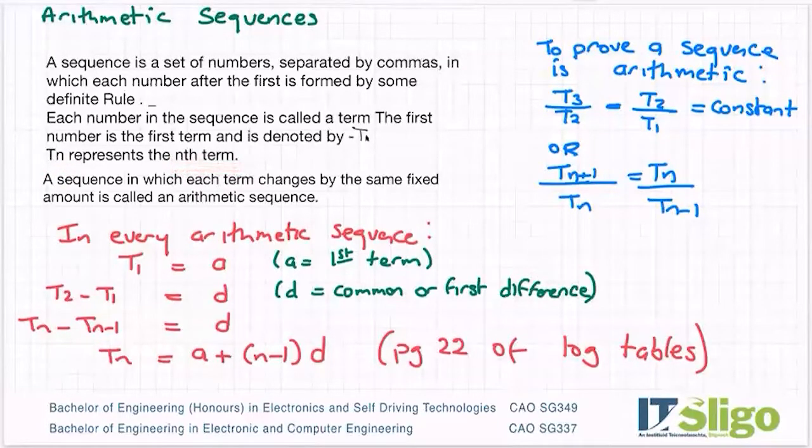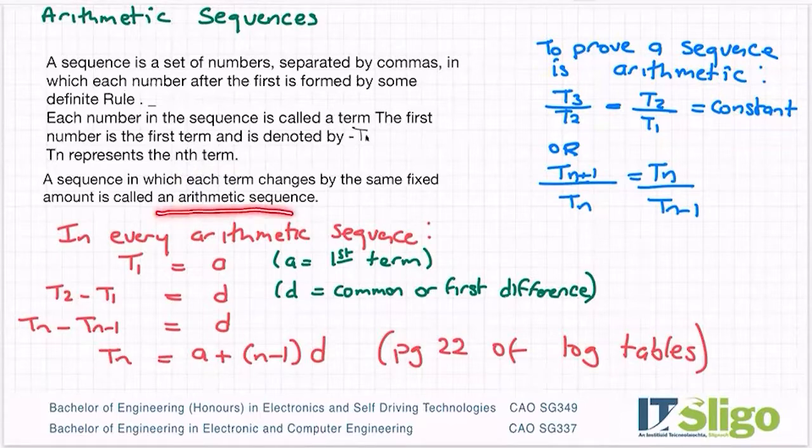A sequence in which the term changes by the same fixed amount every time is called an arithmetic sequence. Or if you're asked what is an arithmetic sequence, it's a sequence of numbers where you add or subtract the same amount every time.